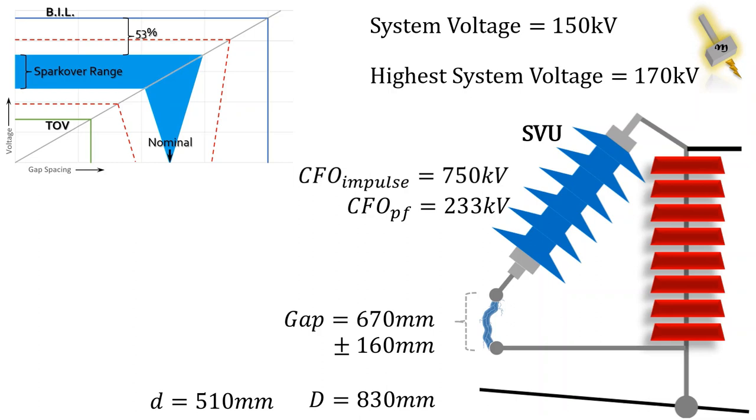Now let's check how much margin the spark gap has against the system TOV. For 670 mm spark gap, the spark voltage is calculated as 311 kV, which is 33% higher than the maximum system TOV. So, the EGLA will always offer protection to lightning over voltage and will not trigger to temporary over voltages.